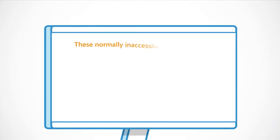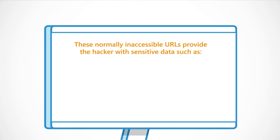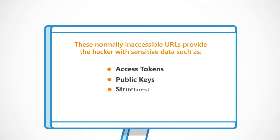These normally inaccessible URLs provide the attacker with sensitive data such as access tokens, public keys, structural information, and user data.